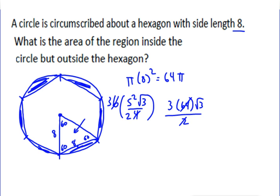That cancels to 32, so you end up with 96√3 as the area of the hexagon. So the area of our shaded region is 64π - 96√3.